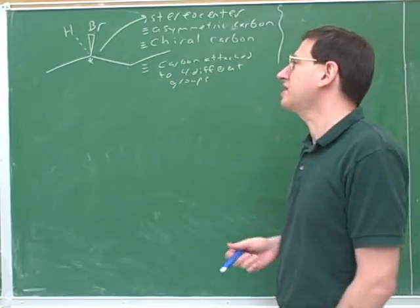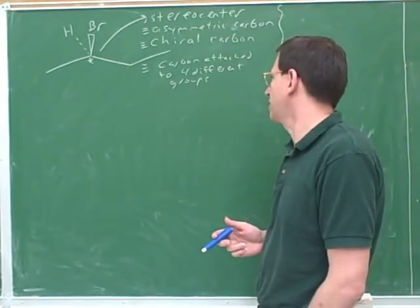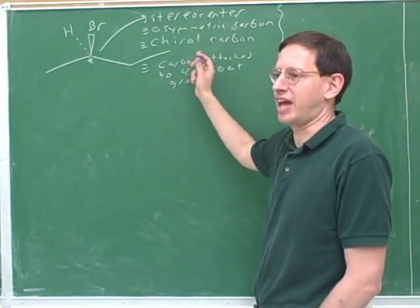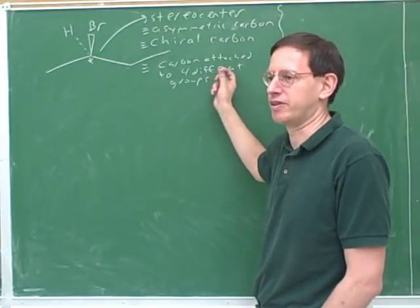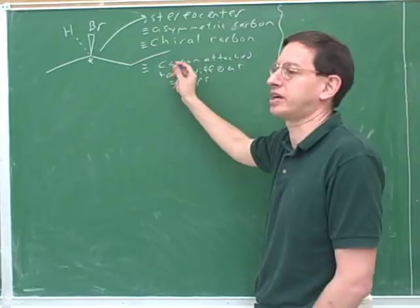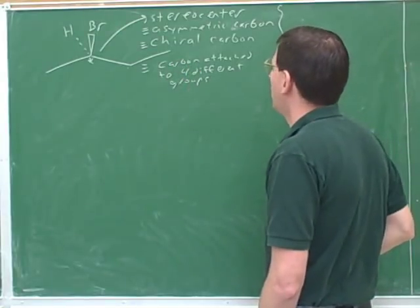Now, theoretically, it's possible to create stereocenters around non-carbons, to have something else attached to four groups. But I don't think you ever saw anything like that this term. So for our purposes, we'll assume a stereocenter is a carbon that's attached to four groups.